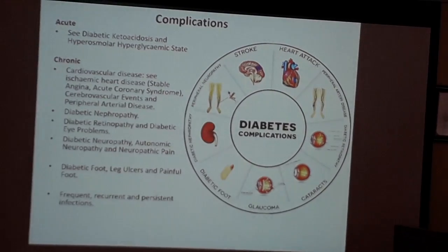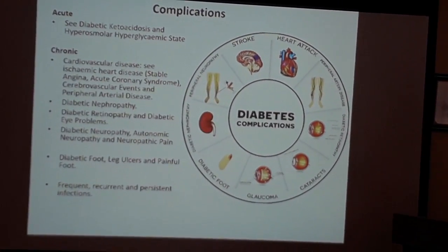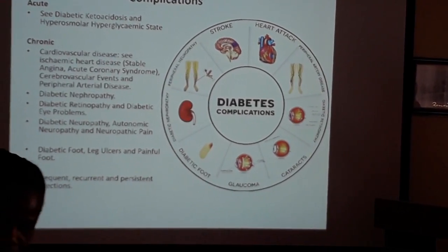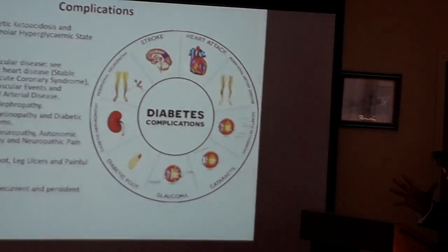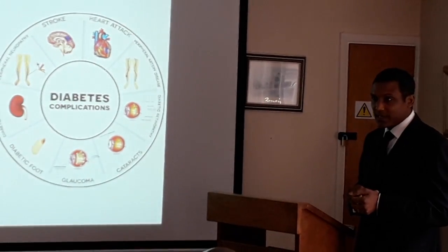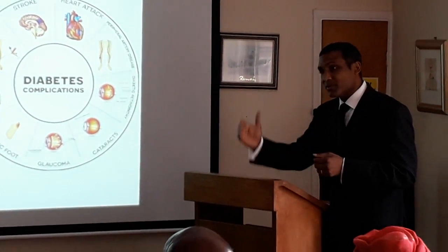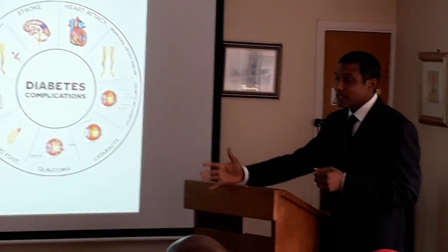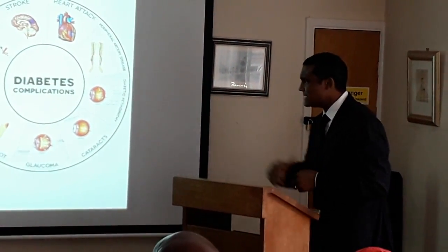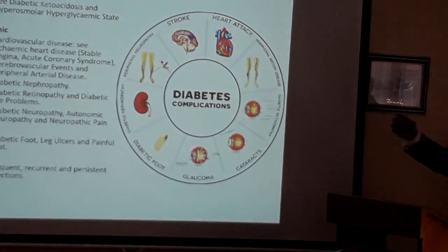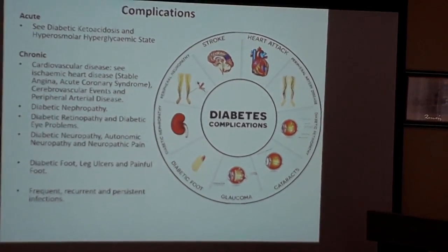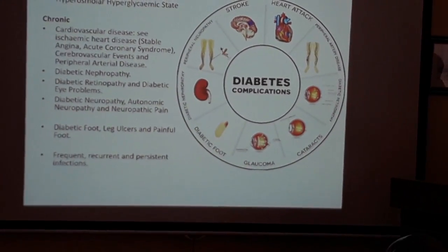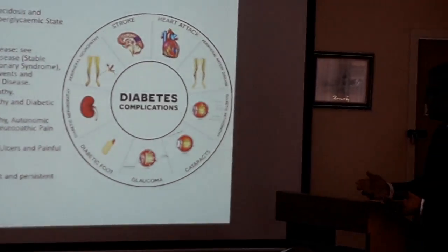Diabetic nephropathy occurs because passing large amounts of glucose through the kidneys damages them. One of the most common reasons for renal failure in Jamaica and the UK is diabetes. Diabetic foot combines vessel disease, immune problems, and neuropathy — ulcers develop, go unnoticed, and worsen. The nervous system is also needed for healing, so everything is interconnected.